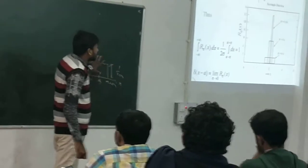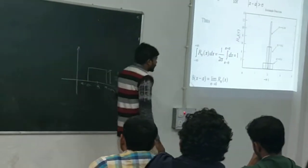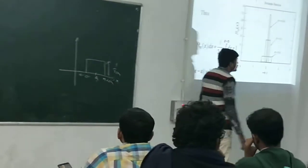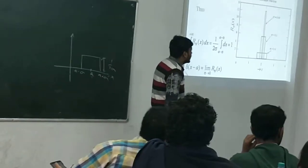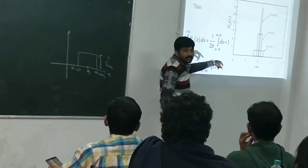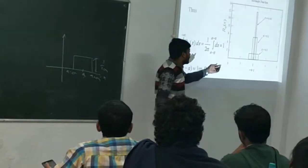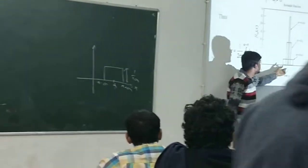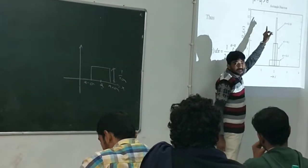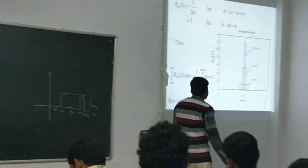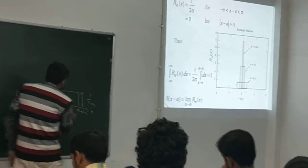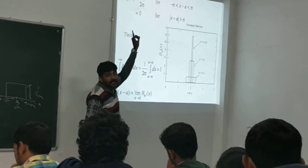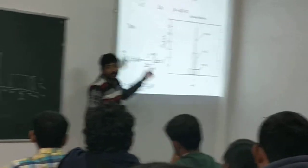So at first I choose the rectangle function — a small rectangle function whose area is one. Now, if I decrease the width of this rectangle, then its height will be increasing. As we decrease the value of sigma — that is, the width — the function will become taller and taller. And at the very extreme point, the width sigma tends to zero, and the function will be infinitely tall and very thin.